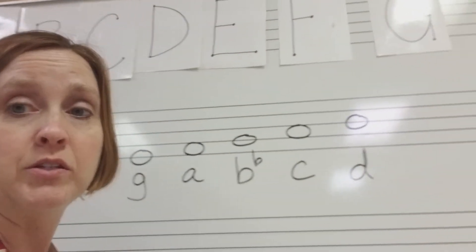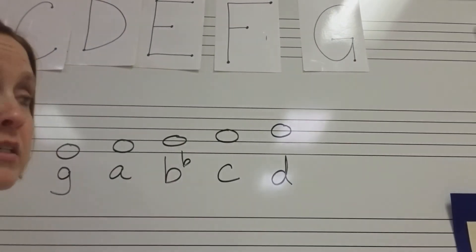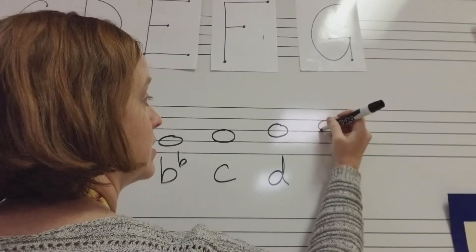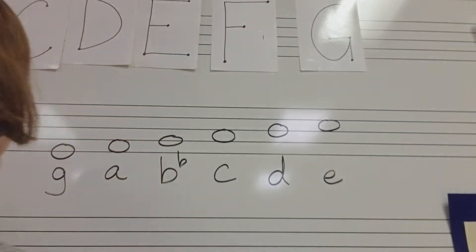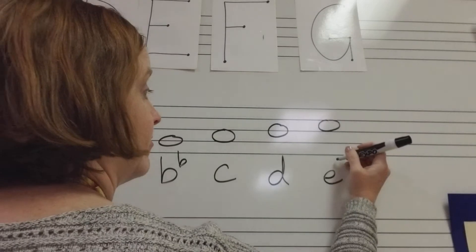I'm going to go ahead and shift this over a little bit so you can see the rest. On the third space, I'm going to draw my note. And after D comes E. But because of our key signature, we are going to call this E flat.